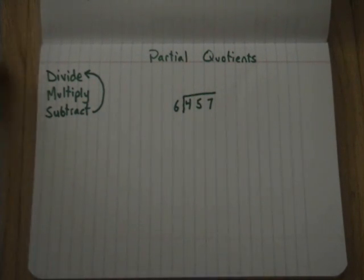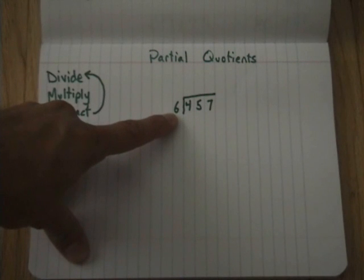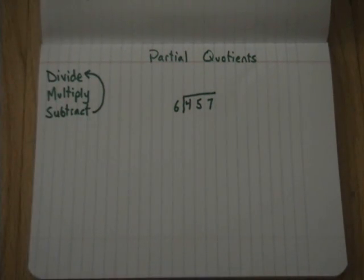The steps for this algorithm are pretty easy. They're divide, multiply, subtract. And you're going to repeat these steps until you get a remainder that is less than your divisor. Here, you want it less than your divisor.